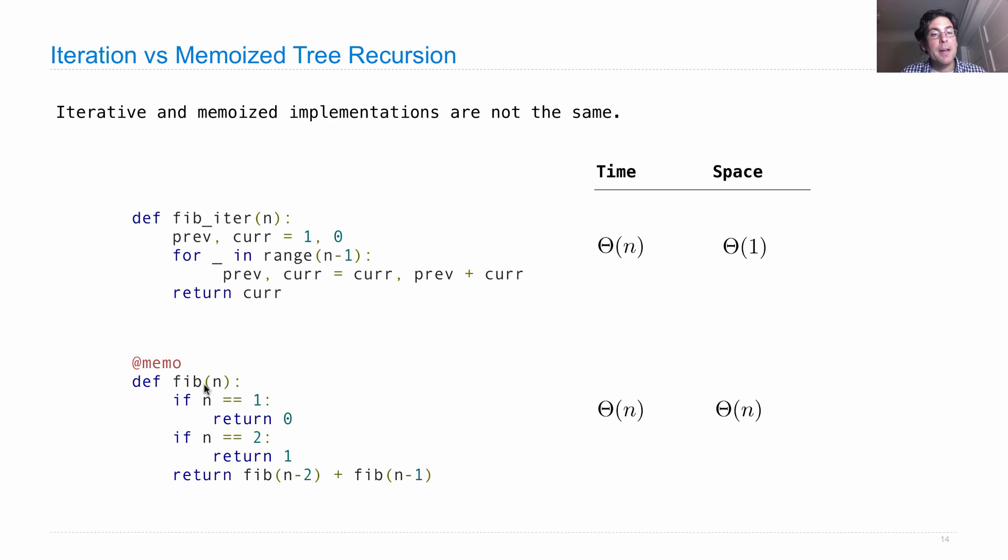We have to memoize fib n for every n up until the n that we want. So for computing fib 30, we have to memoize what fib 29 and fib 28 and fib 27 are in the cache for the memoized version of the function, which means that we have n different entries in that cache.